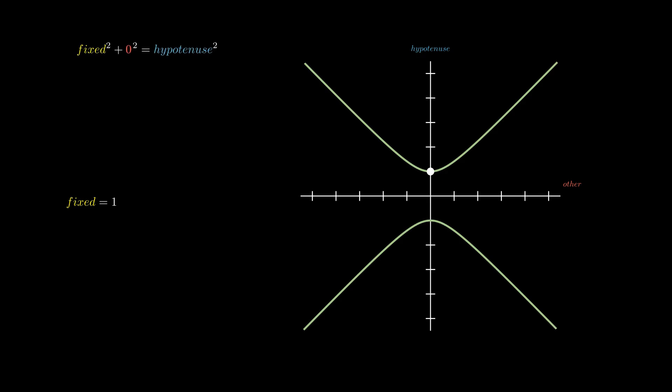Let's set our fixed leg to 1. This shape is called a hyperbola. At this point, the other leg is 0, so the fixed leg equals the hypotenuse. It is the point on the hyperbola closest to the center, called the vertex.